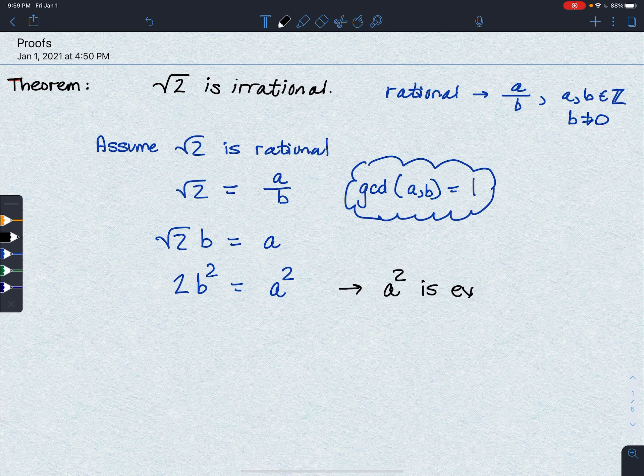So we have 2b squared equals 2k, the quantity squared. And this means that 2b squared is equal to 4k squared. I'm going to divide both sides by 2 because we can.